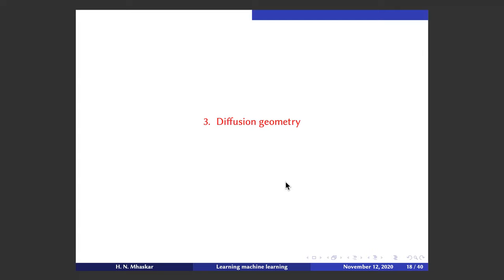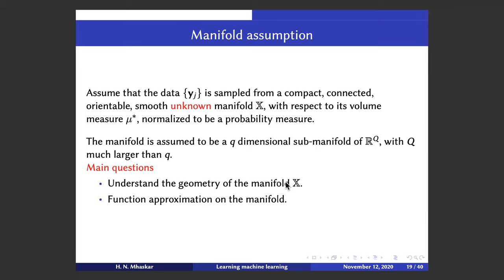One of the things that excited me was the introduction to diffusion geometry. There is a manifold assumption saying our data is sampled from some compact, connected, orientable, smooth, unknown manifold. The manifold is a low-dimensional submanifold of an ambient space, and the measure is absolutely continuous with bounded densities. There are two questions: understanding the geometry of the manifold, and function approximation on the manifold. One of the fundamental theorems in this theory is the theorem of Belkin and Niyogi.